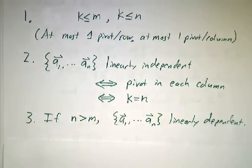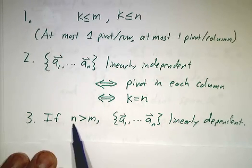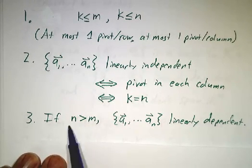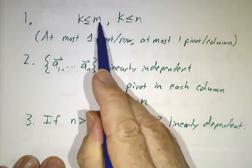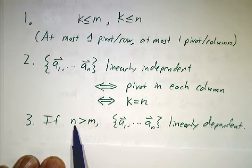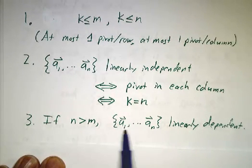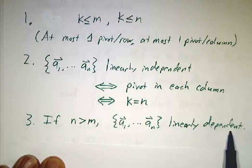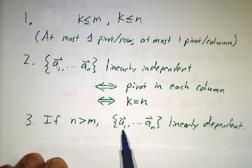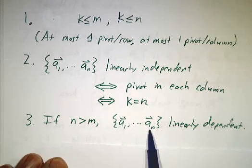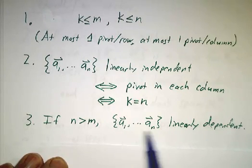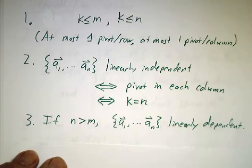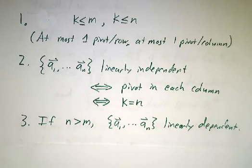Now, if there are more columns than rows—if you've got a short and fat matrix—then that's impossible because the rank is never bigger than m. So if you have a short and fat matrix, they're not linearly independent; they are linearly dependent. So if you have five vectors in R^4 or 17 vectors in R^13, or more vectors in a smaller space, they're always linearly dependent. You can't cram more than seven linearly independent vectors into R^7.